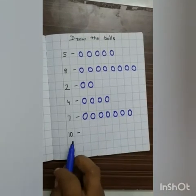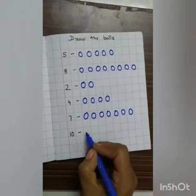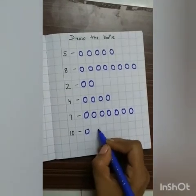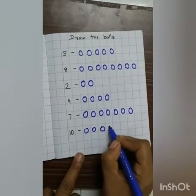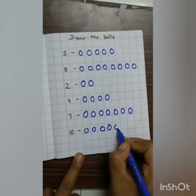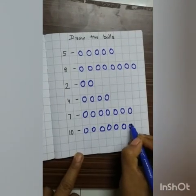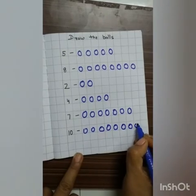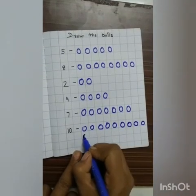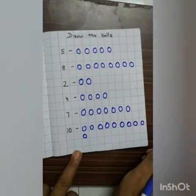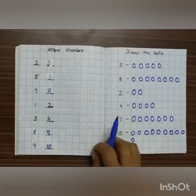Now you have to draw 10 balls. The last one is 10, so you have to draw 10 balls: 1, 2, 3, 4, 5, 6, 7, 8, 9, and 10.